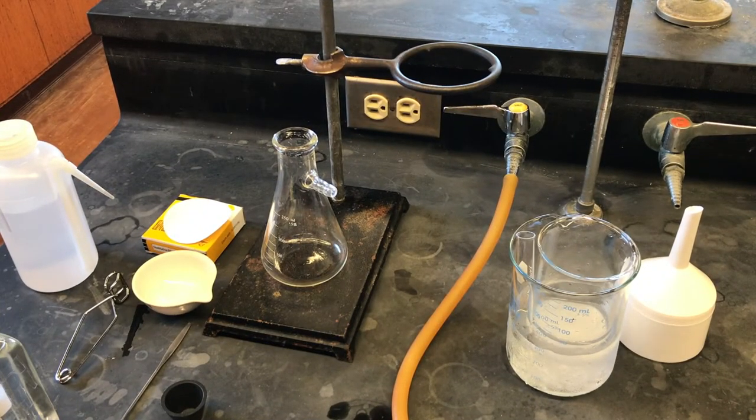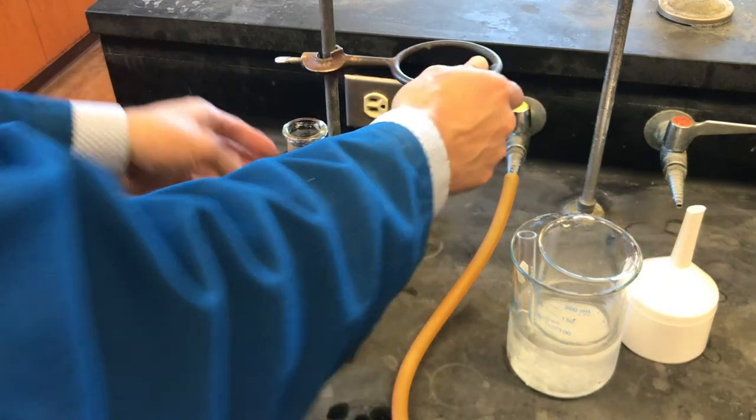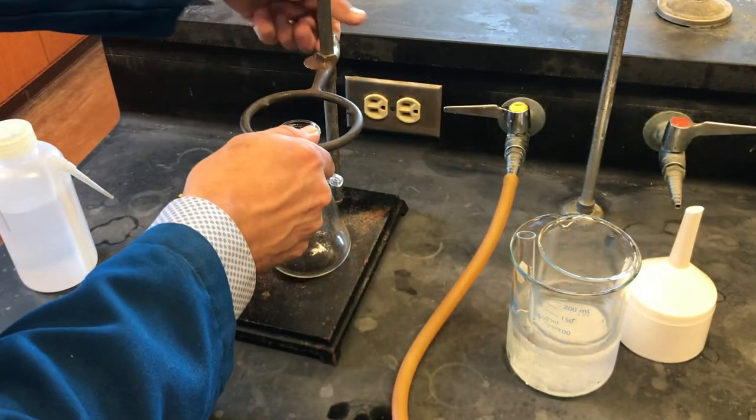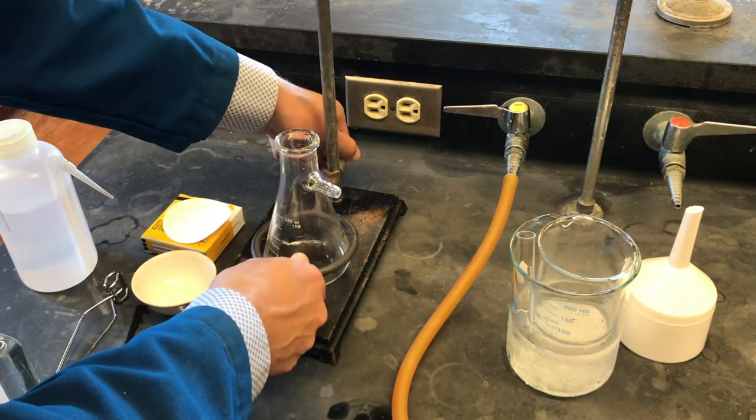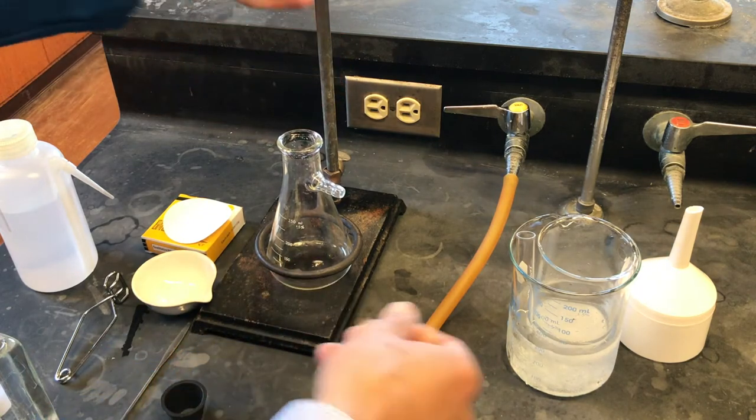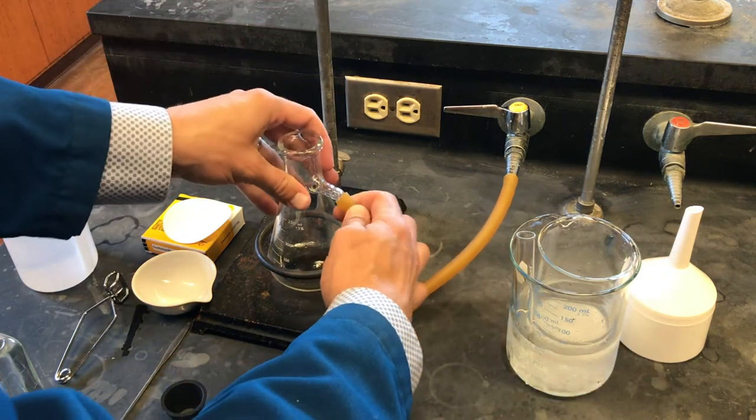We will again prepare our filtration setup using the Buchner funnel. It should be noted, in this filtration we will be saving the crystals on top of the filter paper, not the filtrate in the filter flask.